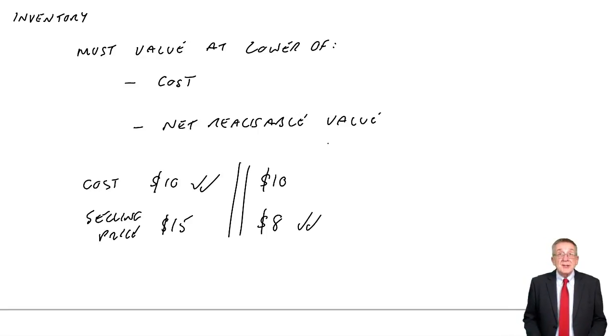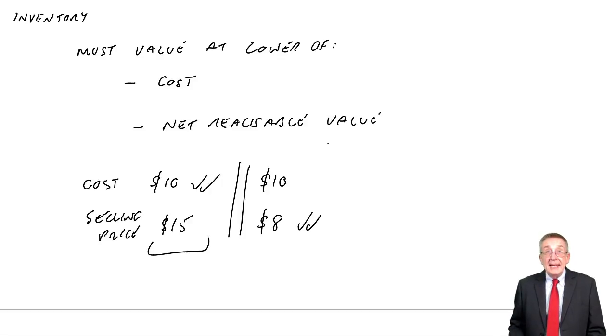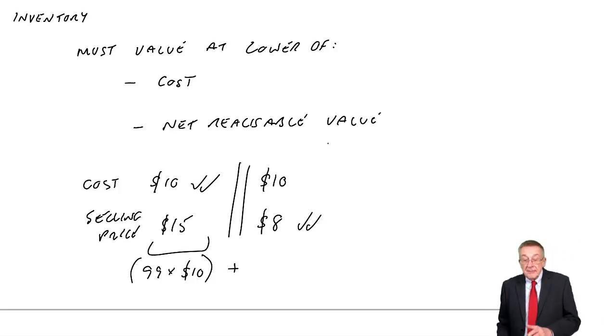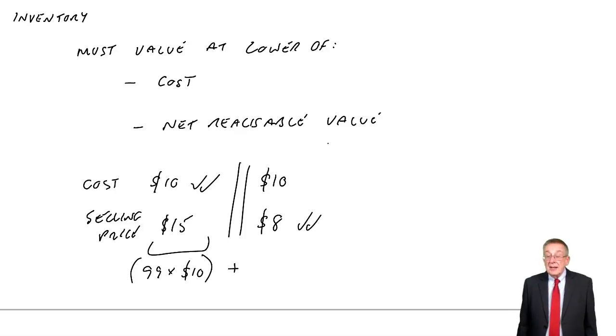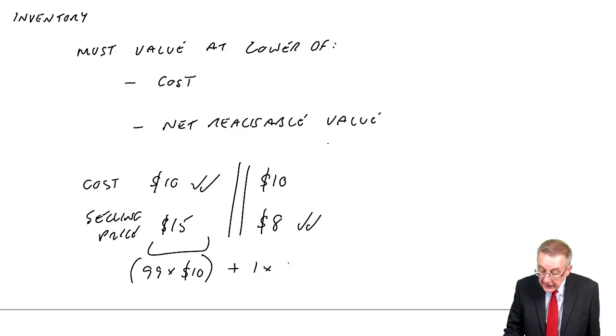You must value each item at the lower of cost and net realizable value. So if I have 100 desks in inventory, if 99 of them are okay, those 99 would be valued at $10. But if the other one is the damaged one, and I'm going to sell it cheaper, that one would be valued at $8. You must value at the lower of the two.